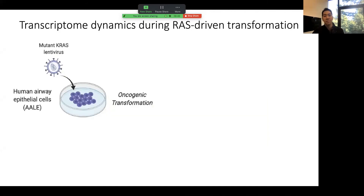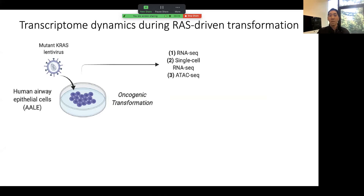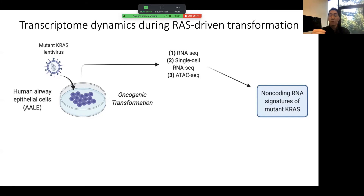We wanted to use a very simple system developed by Bill Hahn's lab, where you take human lung airway epithelial cells and simply introduce mutant KRAS, which induces oncogenic transformation — these cells have no other known mutations in oncogenes or tumor suppressor genes. We performed bulk RNA sequencing and single-cell RNA sequencing to understand the heterogeneity of this initial response to oncogenic RAS signaling, and also ATAC-seq to understand how oncogenic RAS signaling reprograms the non-coding transcriptome at the epigenomic level. We wanted to identify non-coding RNA signatures of mutant KRAS and understand how they are regulated.